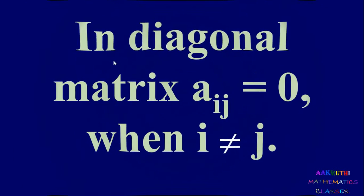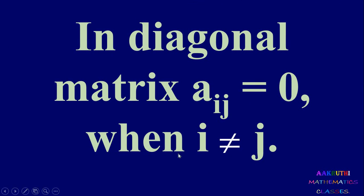Note: In a diagonal matrix, aij equal to 0 when i is not equal to j. That is, elements a12, a13, a21, a23, etc. are all zero. Diagonal elements a11, a22, a33, etc. are not zero. So all diagonal matrices are square matrices.